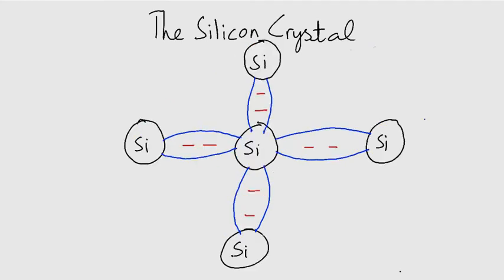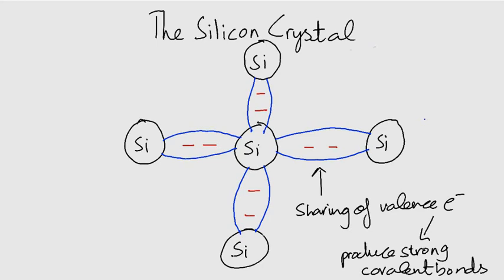Take a look at this bonding diagram. This sharing of valence electrons produces the covalent bonds that hold the atoms together. Each valence electron is attracted equally by the two adjacent atoms which share it.